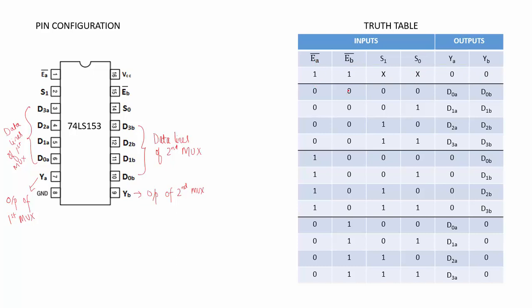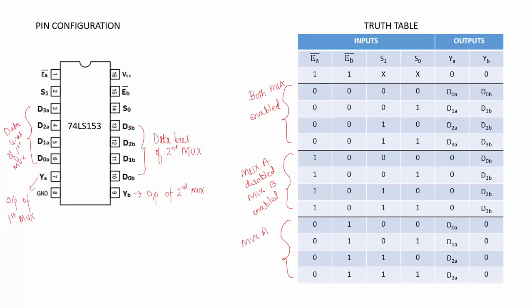When EA bar is 0 and EB bar is also 0, both MUXs are enabled. Depending on the select line, a particular data line gets connected to the output. When the select line is 0 0, the D0 data line of each multiplexer gets connected to the output, so YA becomes D0A and YB becomes D0B.